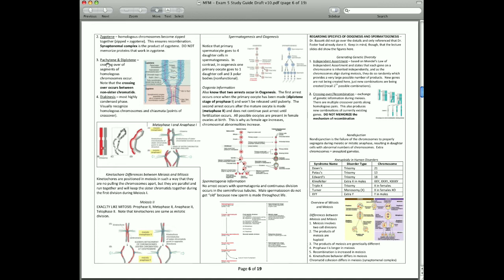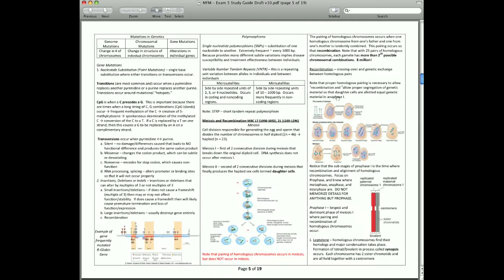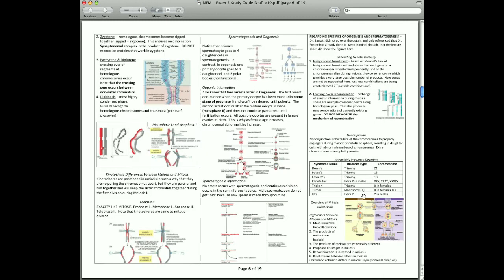Pachytene and diplotene are the third and fourth stages, and in these stages, crossing over actually occurs between non-sister chromatids. So the gray and the red are non-sister chromatids. The two grays are not going to exchange material. They don't need to. We need genetic exchange between paternal, maternal, inherited genes.